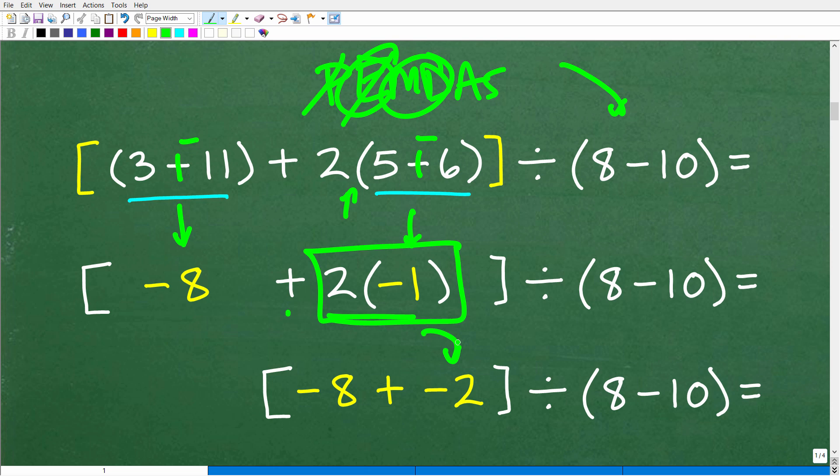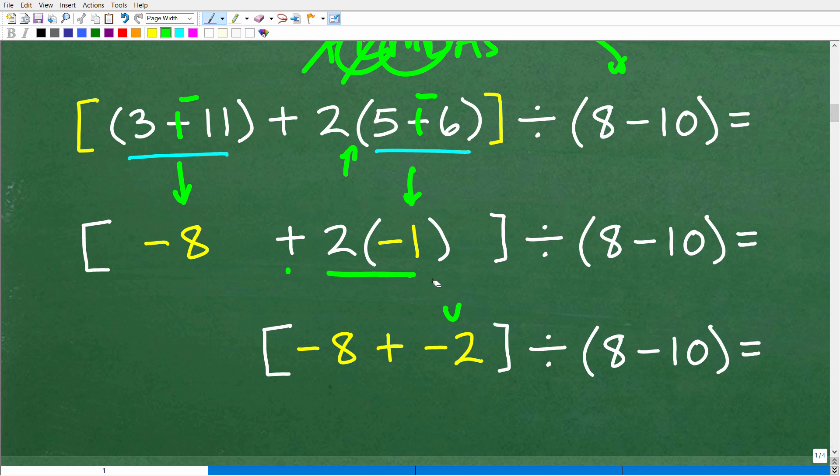2 times negative 1 is negative 2. If you don't know how that works, you just need to do some review on working with positive and negative numbers. The good news is that all these things that we're doing here are pretty easy to learn. Don't feel bad or don't think that this is super complicated. It just means that you forgot how to do this, or maybe you never learned it in the first place. But this stuff is not that hard. Now let's take a look at what we have. We have negative 8 plus 2 times negative 1, which of course is negative 2. So this is the next step.